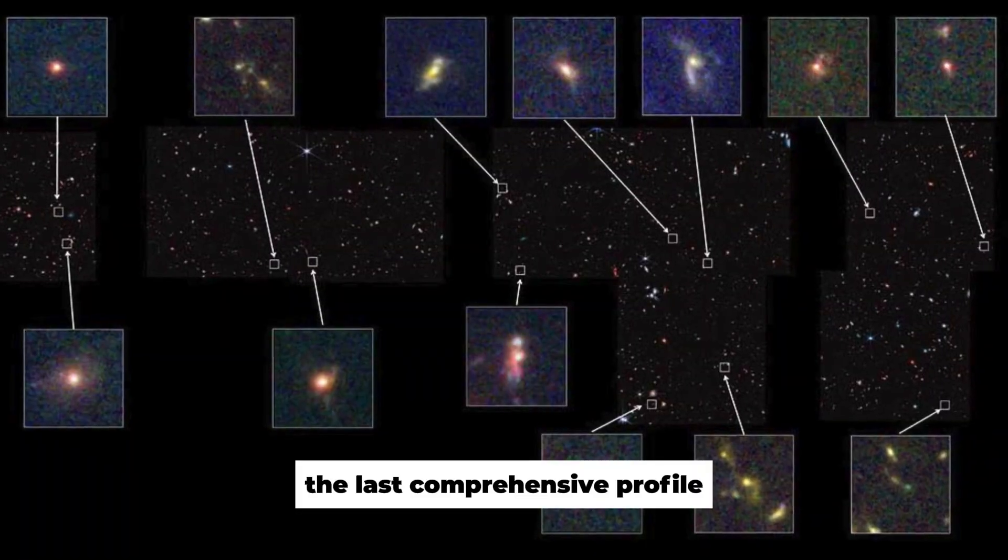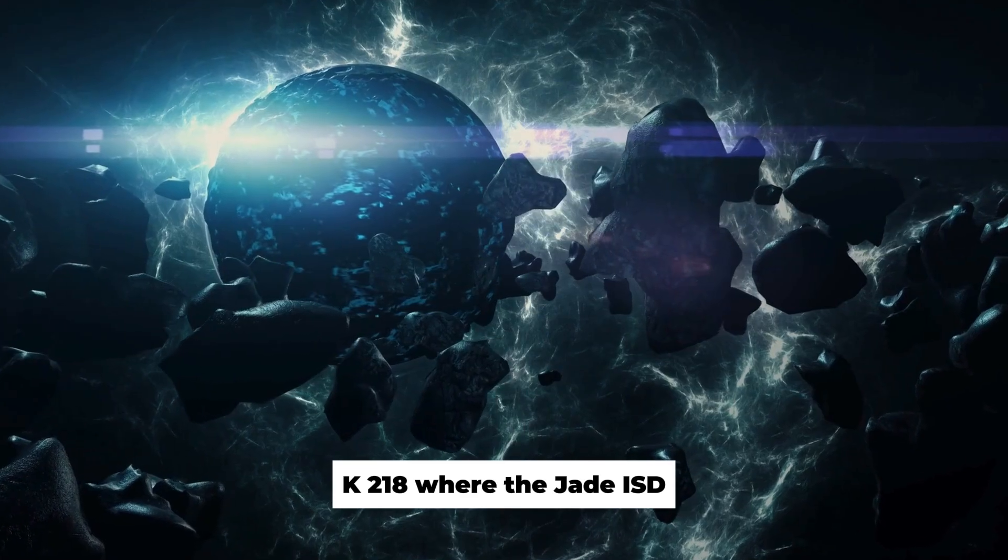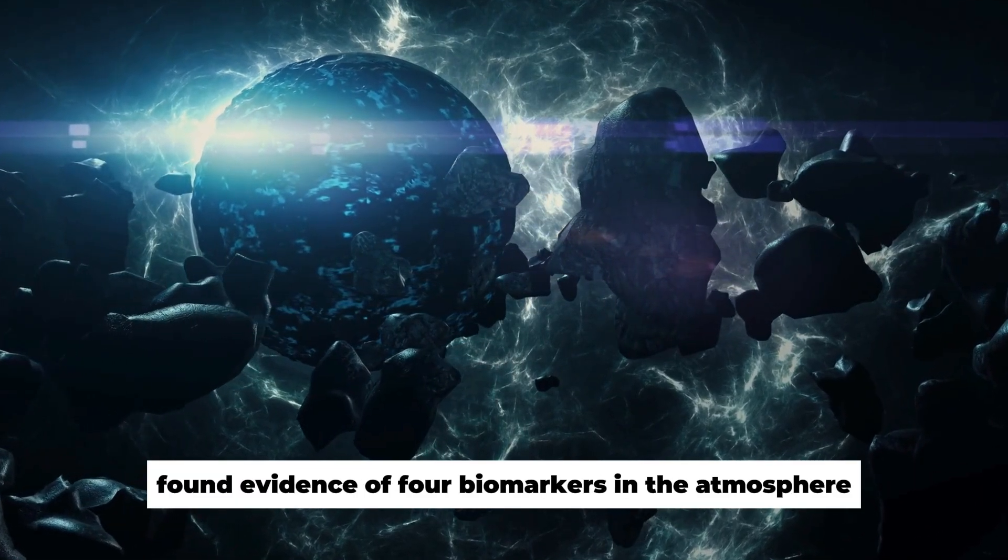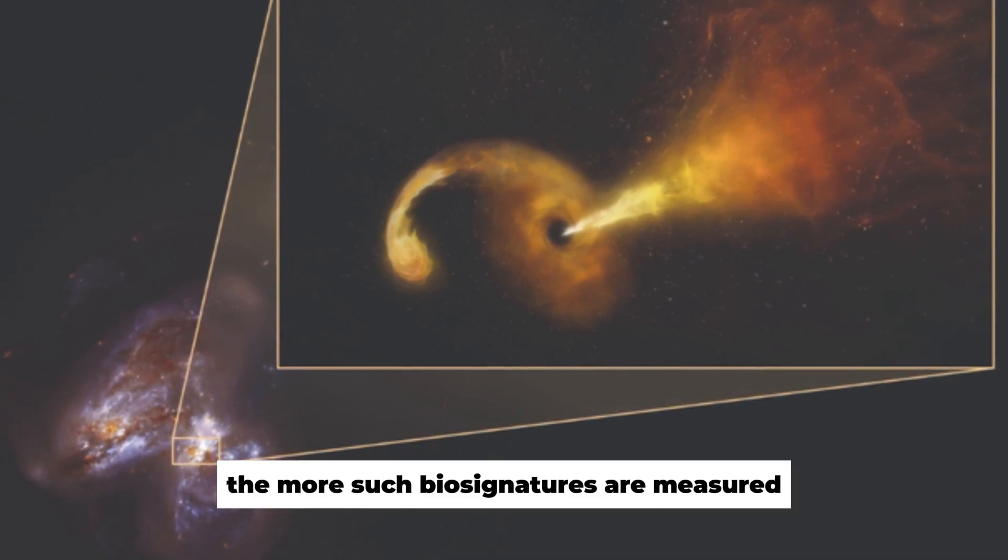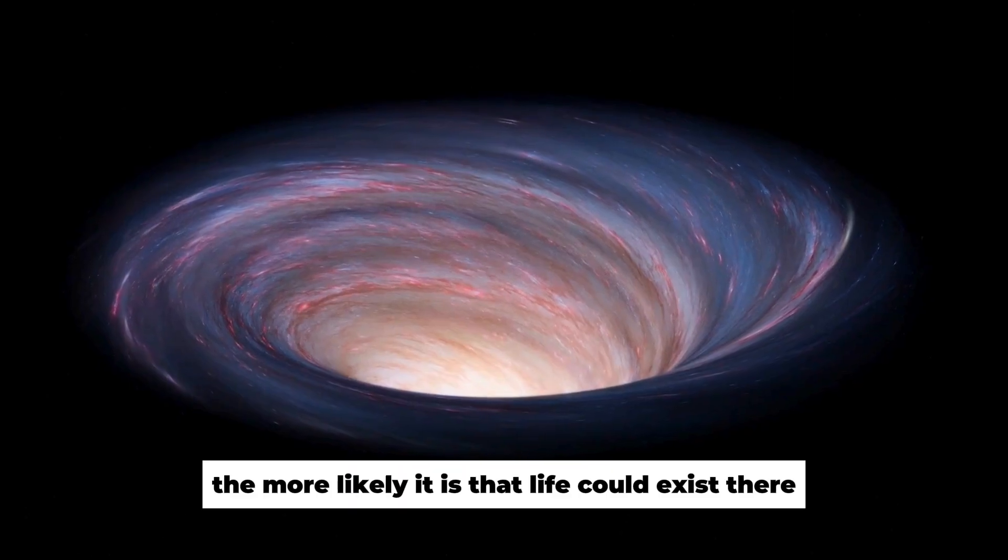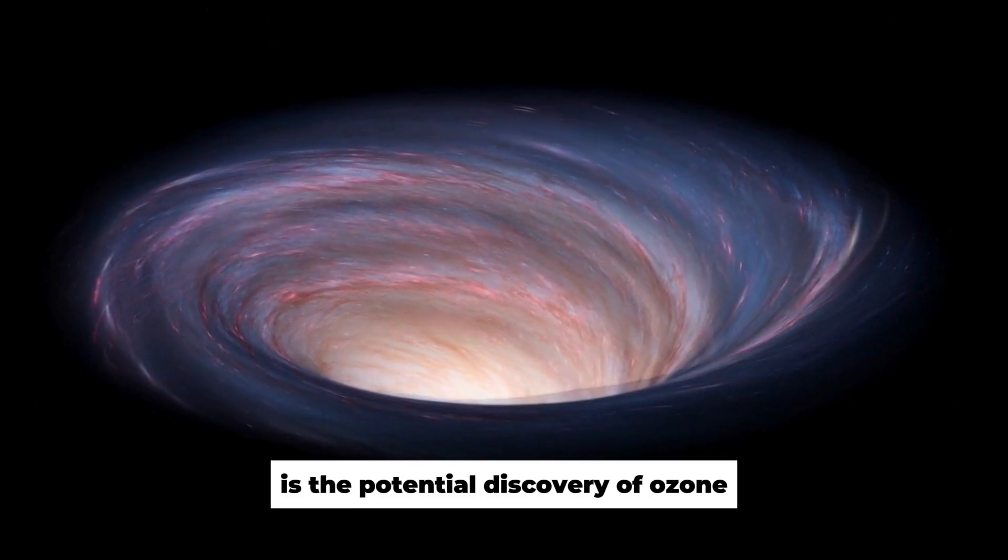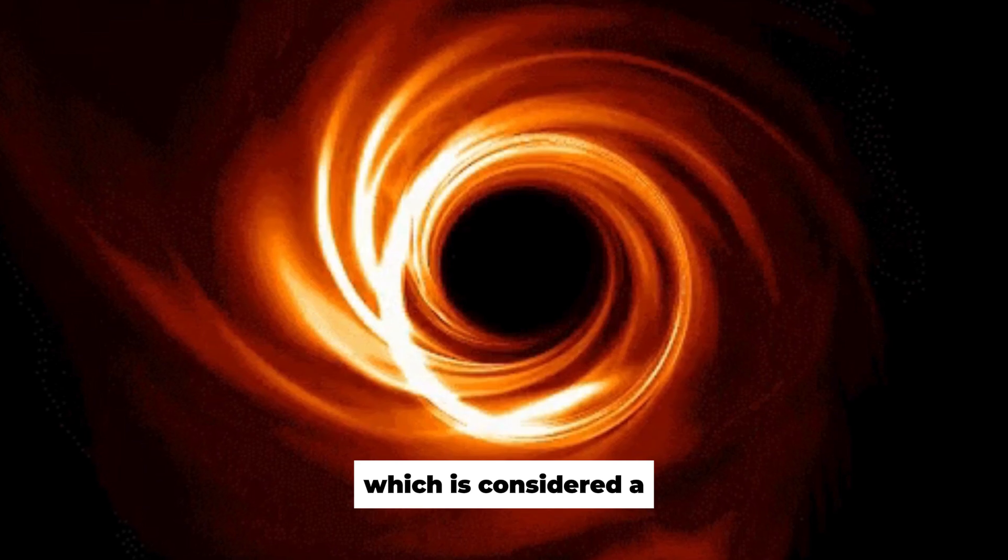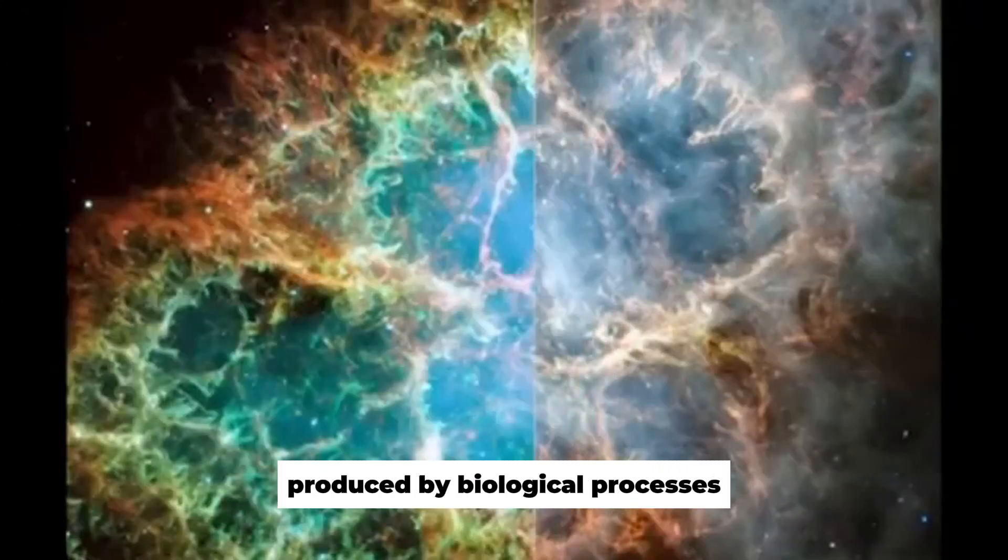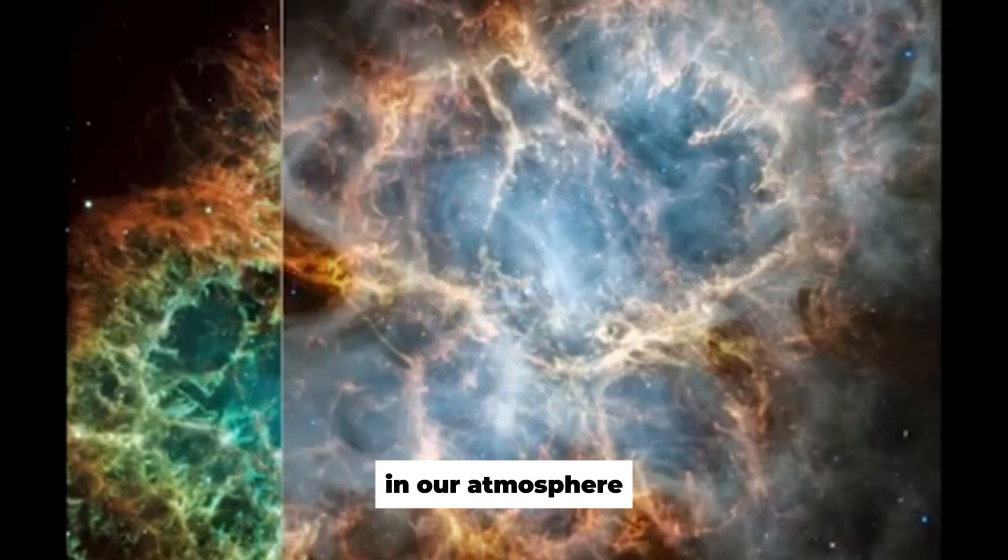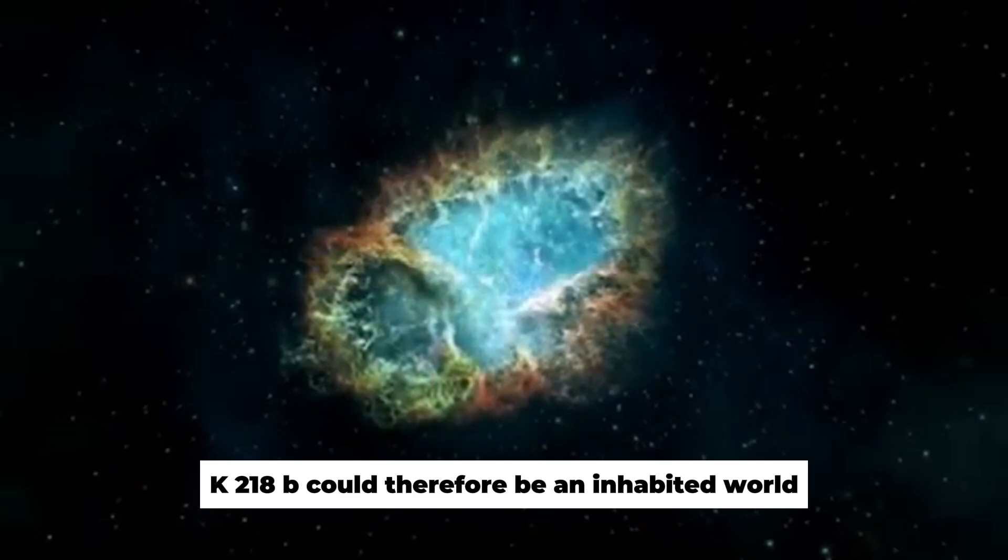The last comprehensive profile was obtained from the exoplanet K2-18b, where the JWST found evidence of four biomarkers in the atmosphere. The more such biosignatures are measured around a planet, the more likely it is that life could exist there. Particularly exciting is the potential discovery of ozone, which is considered a strong indicator of biological activity because it is predominantly produced by biological processes in our atmosphere.